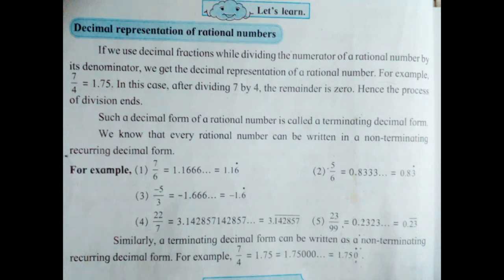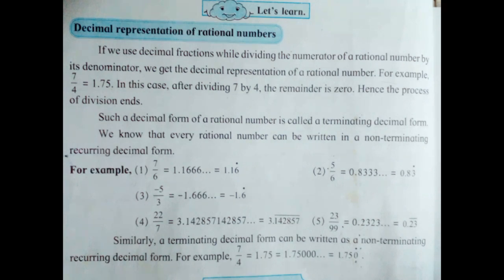If the digits are repeating after the decimal point, you have to put a line on top of the numbers. After dividing 7 by 6, the quotient is 1.1666 and the digit 6 is repeating. On top of 6, you have to put a dot after the decimal point. After putting the dot on top of 6, you stop writing 6.666. So the answer will be 1.16 with a dot on top of 6.